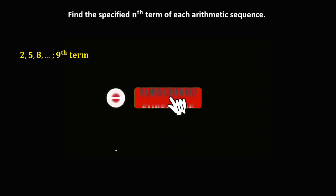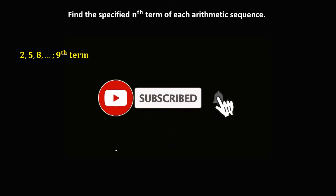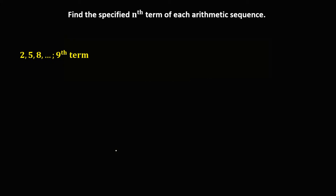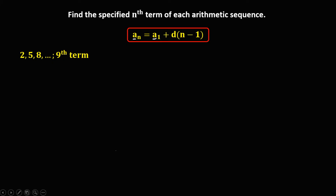Welcome to MathStorya. Let's find the nth term of the arithmetic sequence using this formula: a sub n, that's the last term, equals a sub 1, that's the first term, plus d, the common difference, times n minus 1.